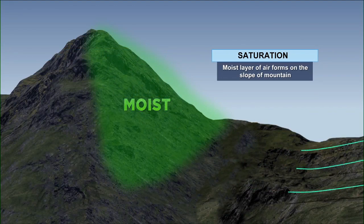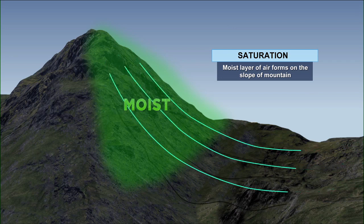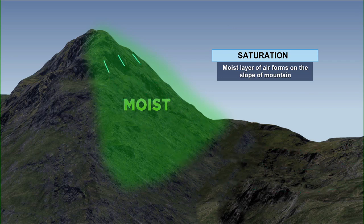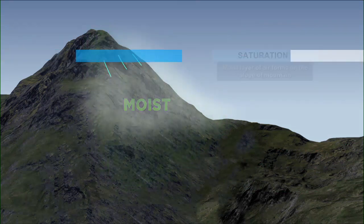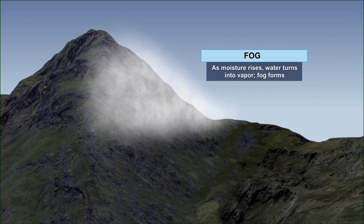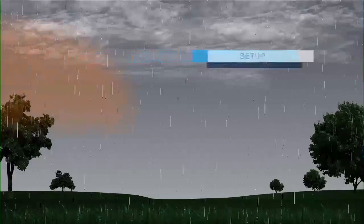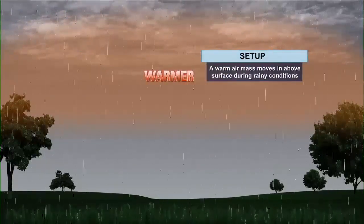With upslope fog, you're going to have that moist layer — anytime we talk about fog, you have to have some type of moist layer. So you have that saturation: the moist layer of air forms on the slope of the mountain. And then voilà, as moisture rises the water turns into vapor and the fog forms.